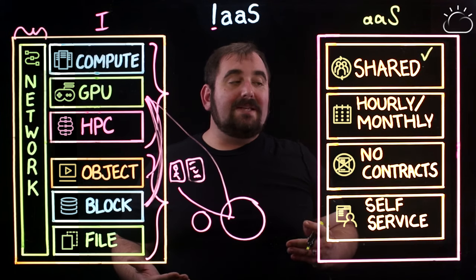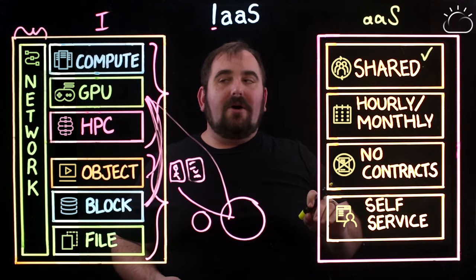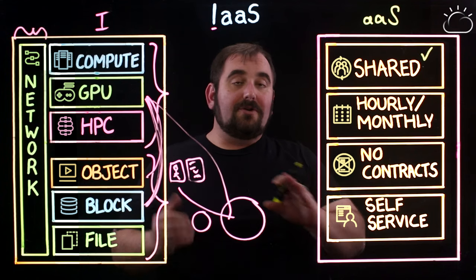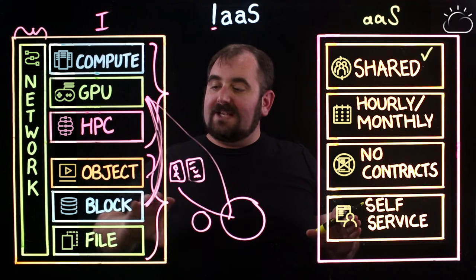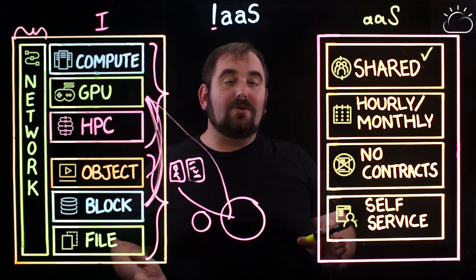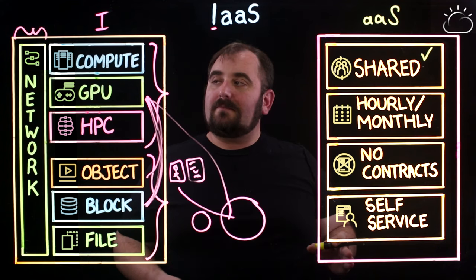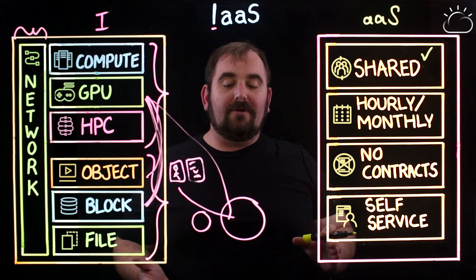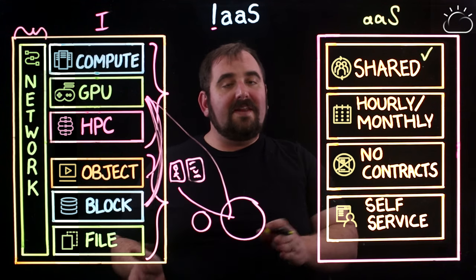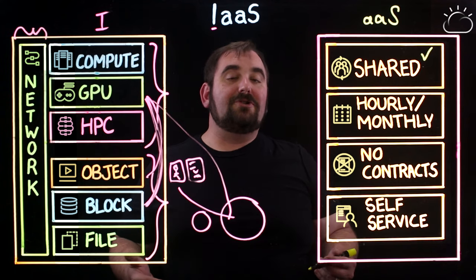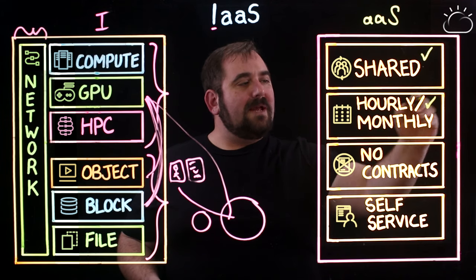The second piece is the hourly or monthly billing. In the case of compute, it could be a certain number of cents or dollars per hour or per month. In the case of storage, we bill by the amount of data stored in a given month — cents per gigabyte per month. In the case of network, there are two metrics: the size of the pipe, for which you pay a per-month charge, and the amount of data that goes through it, measured in cents per gigabyte per month.